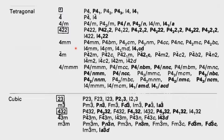In the tetragonal system there is only the possibility of a primitive as well as the body-centered lattice. We see that 4/m and 4/mm are the ones in which the center of symmetry comes in. 4-bar is also non-centrosymmetric, generating space groups P4-bar and I4-bar. There are a large number of possible non-centrosymmetric systems in the tetragonal system.